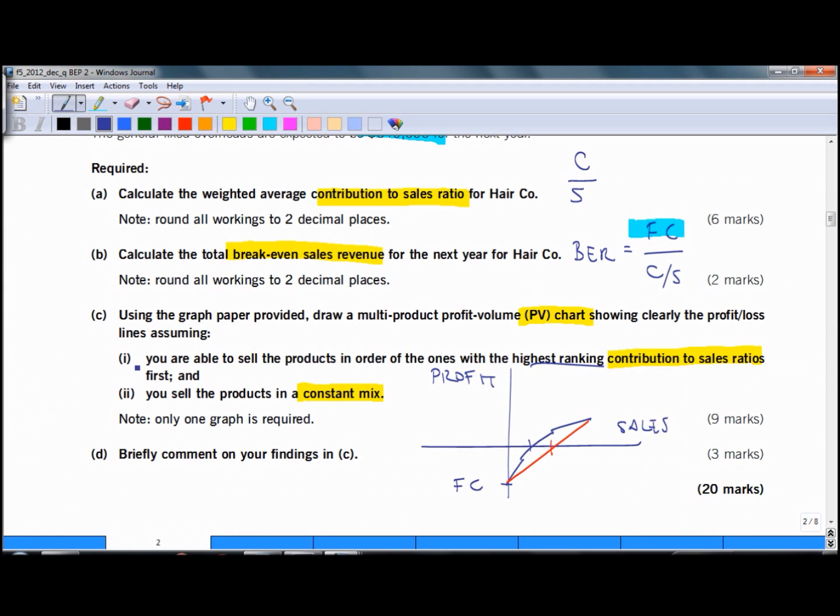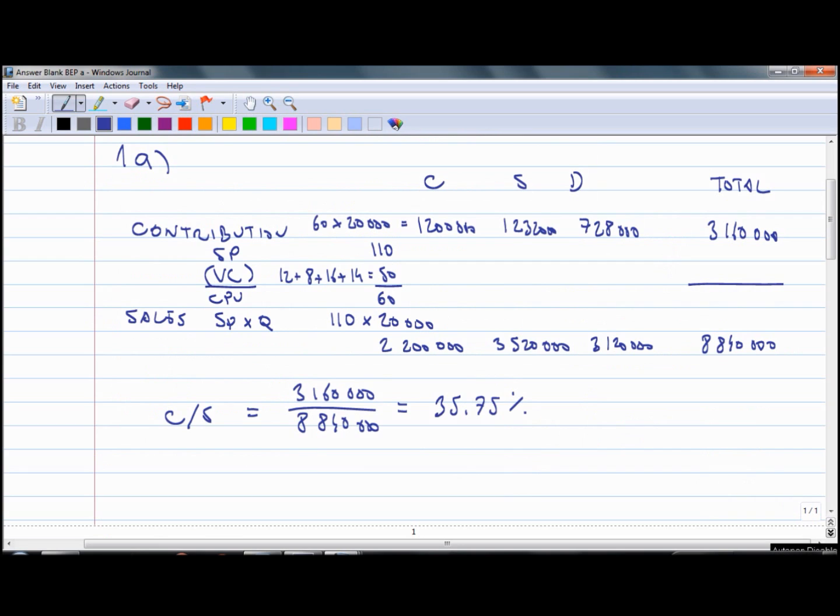In requirement C1 we need to draw the kinked blue line. For that first we need to rank the contribution sales ratios for each product, and then calculate the coordinates of these three points. First we need to rank the products and we will use contribution to sales ratio in order to rank them. Contribution to sales ratio for product C can be calculated by dividing contribution of C divided by sales of C, which comes to 55% approximately. Then for S similarly we get 35% and for D 23%. We would start to sell the one which has the highest, then second highest and then the third highest.